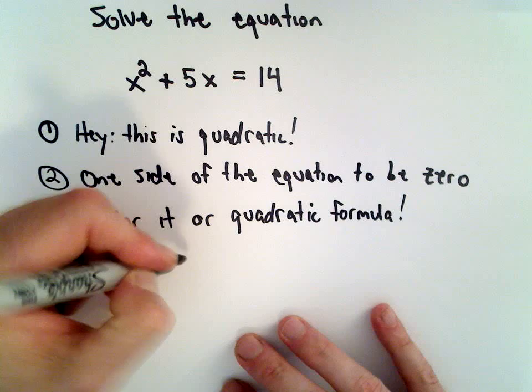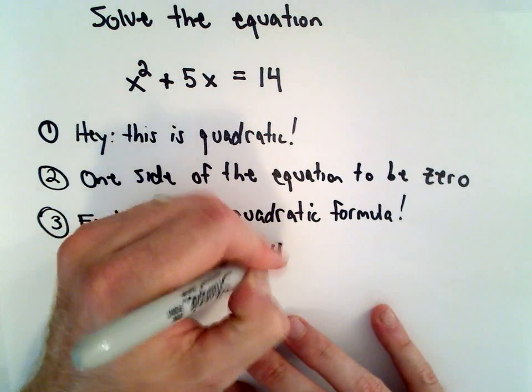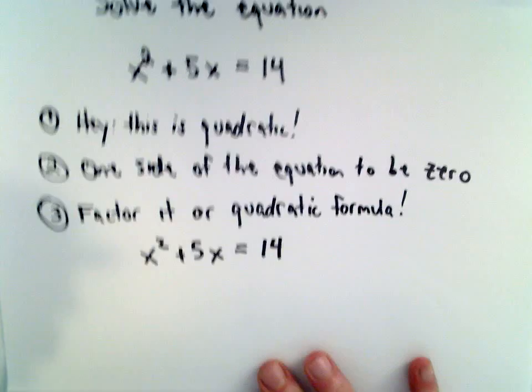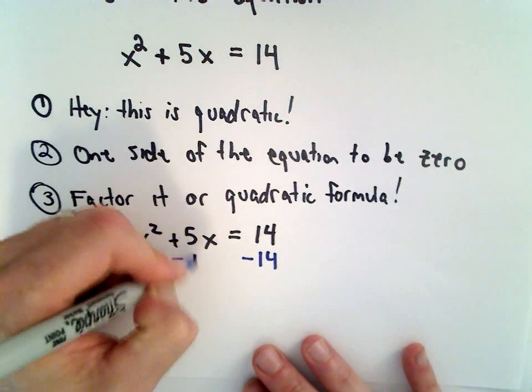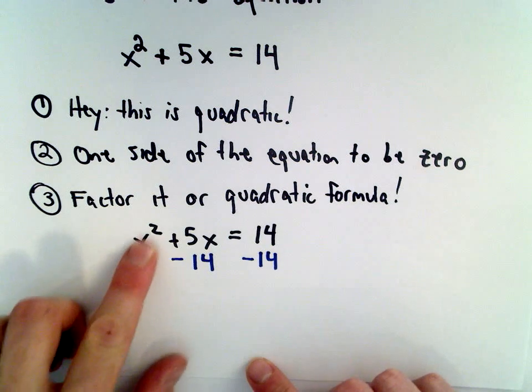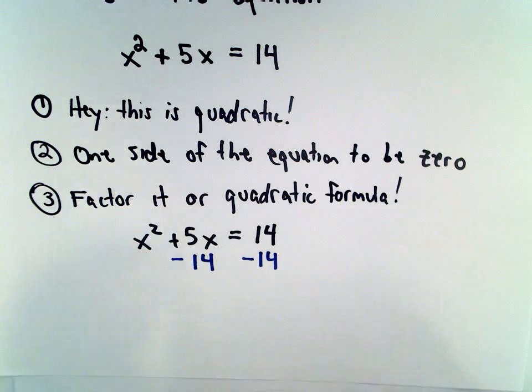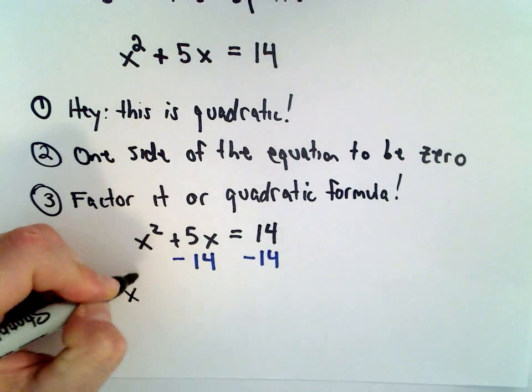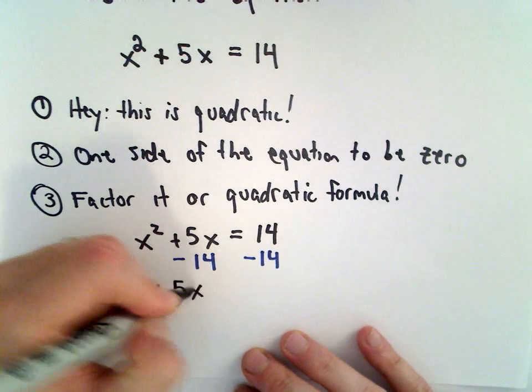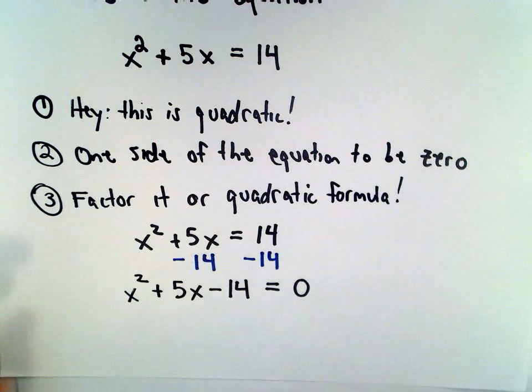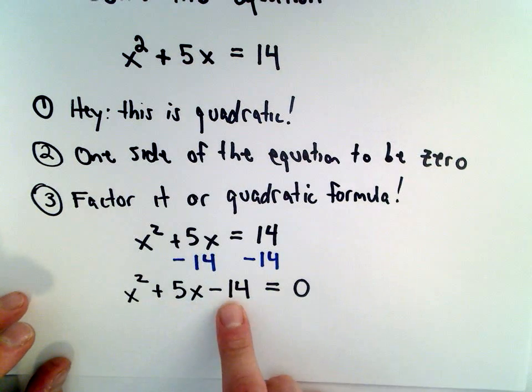So we have x squared plus 5x equals 14. So the first thing I'm going to do to make one side of the equation equal to 0 is I'm going to subtract 14 from both sides. The other thing is I like the x squared term to be positive. So I'm going to move everything to the left side here and make the right side equal to 0. Well, I don't have any like terms on the left side, so I can't combine them, but that's okay. So I'll have x squared plus 5x minus 14 equals 0.